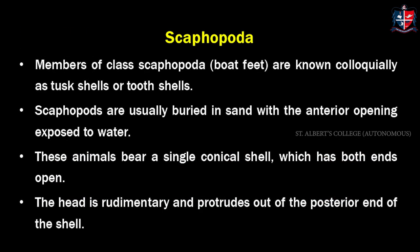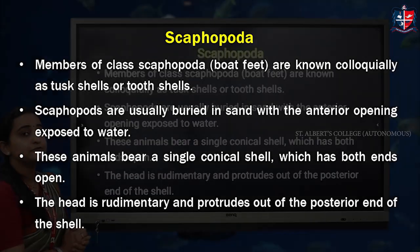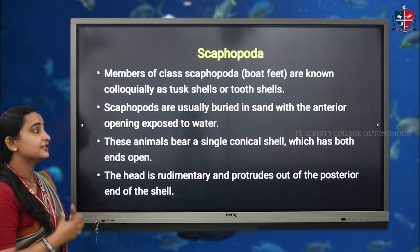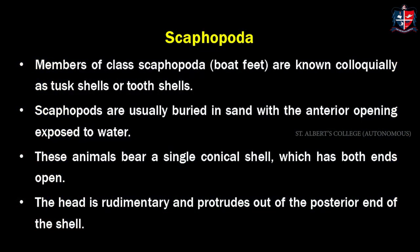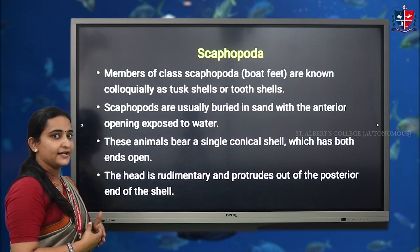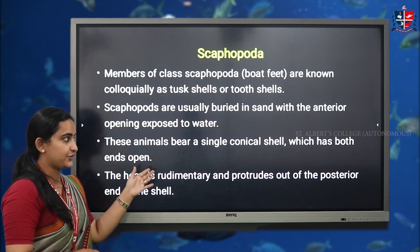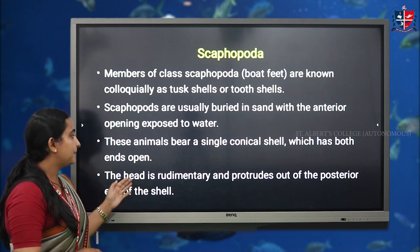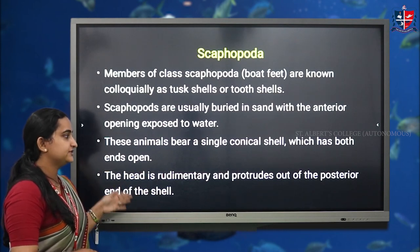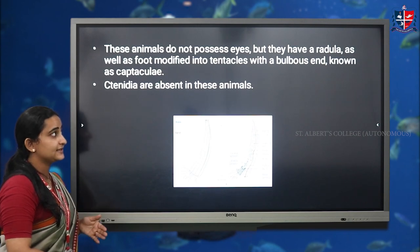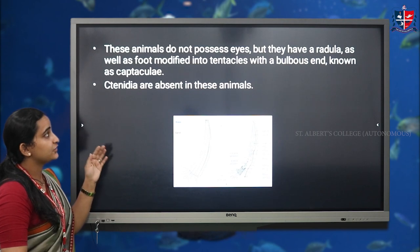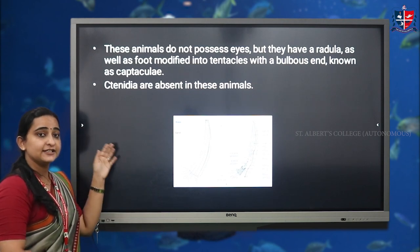The last class is Scaphopoda, also referred to as 'foot like shovel' animals and colloquially known as tusk shells or tooth shells. Scaphopods are usually buried in sand with the anterior opening exposed to water. They bear a single conical shell with both ends open. The head is rudimentary and protrudes out the posterior end of the shell. These animals do not possess eyes, but they have a radula as well as a foot modified into tentacles known as captacula, which are used for locomotion.